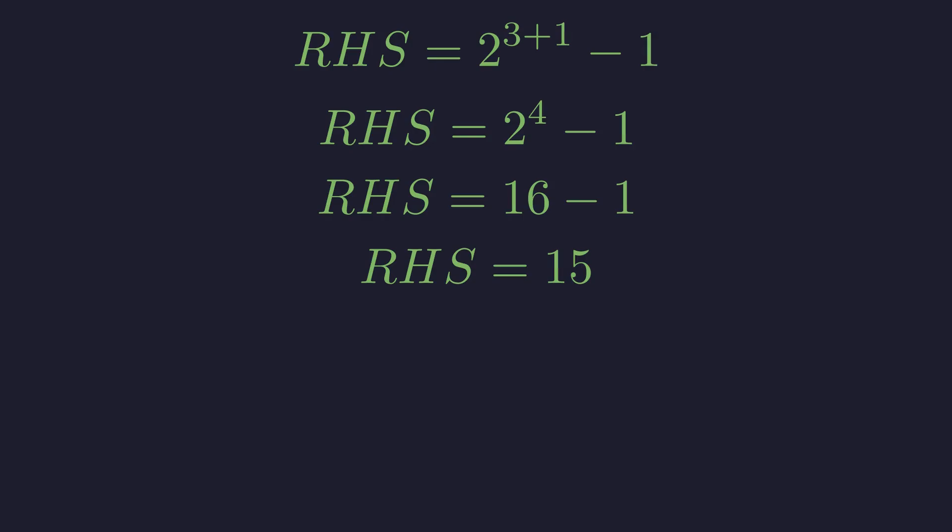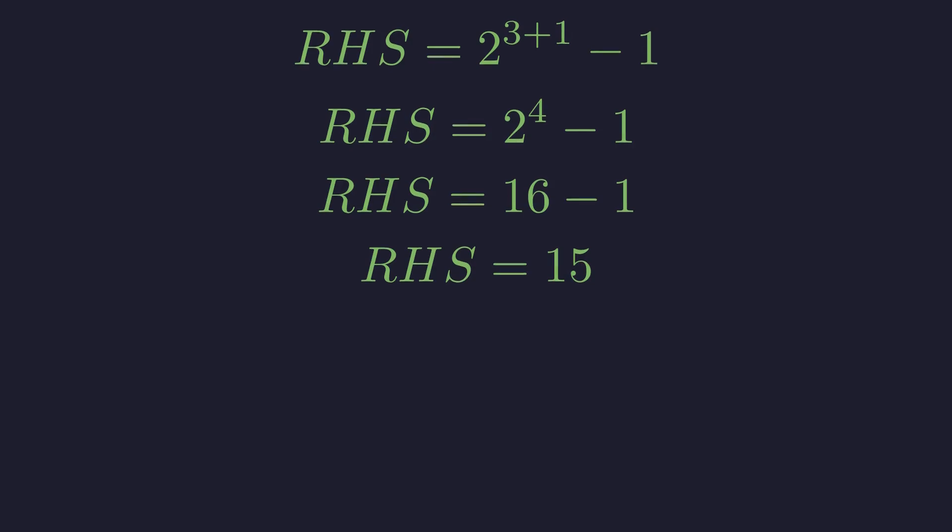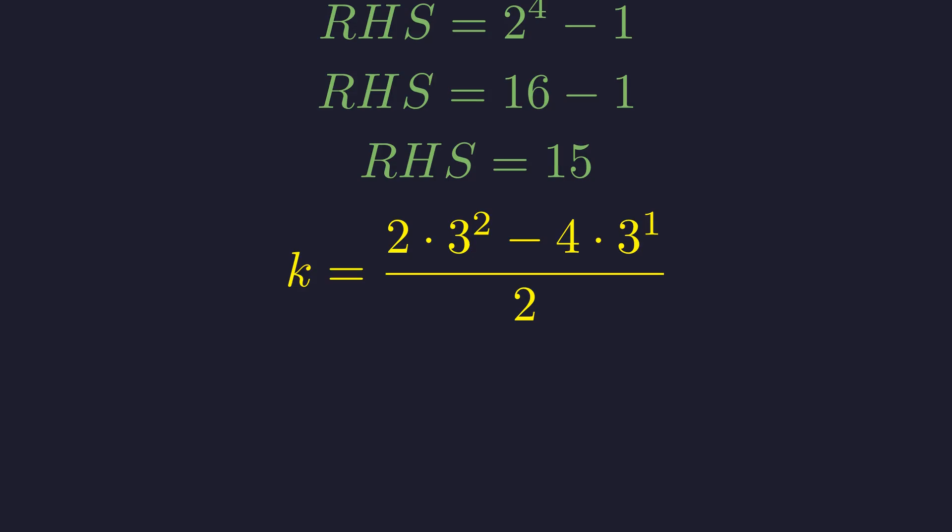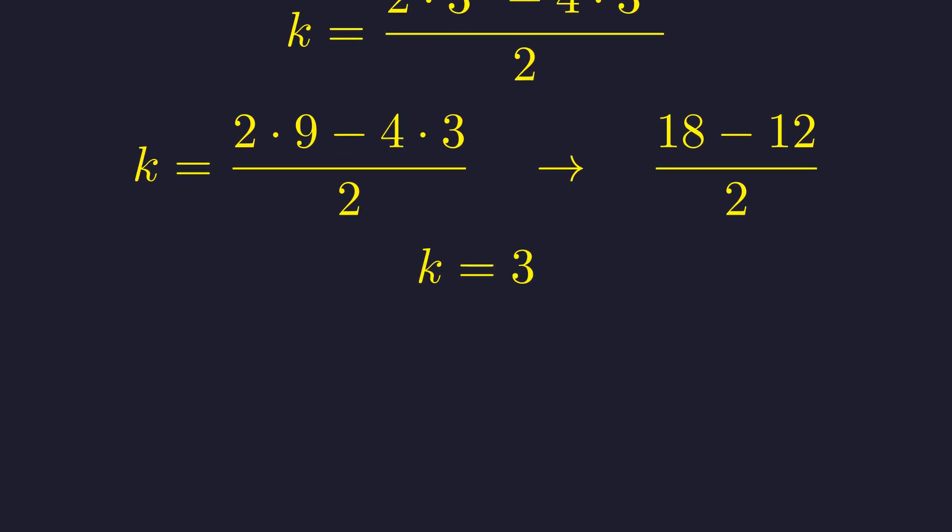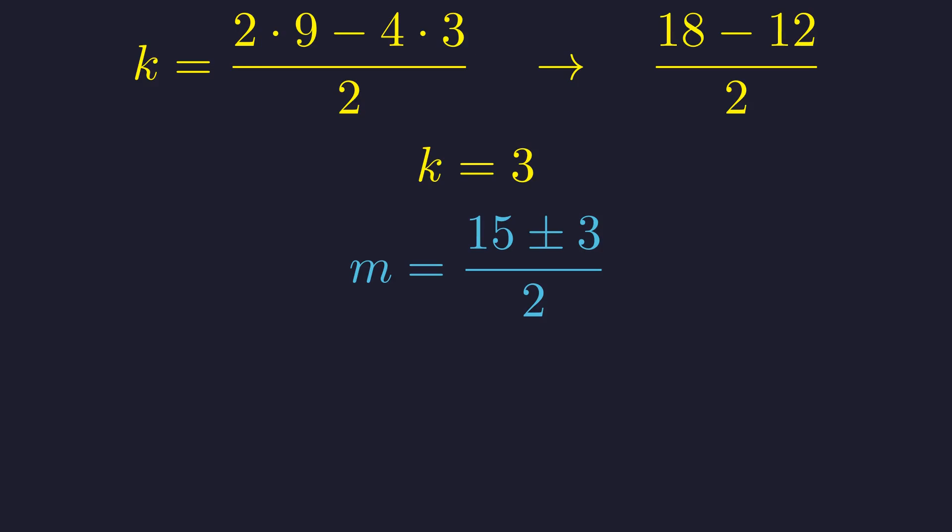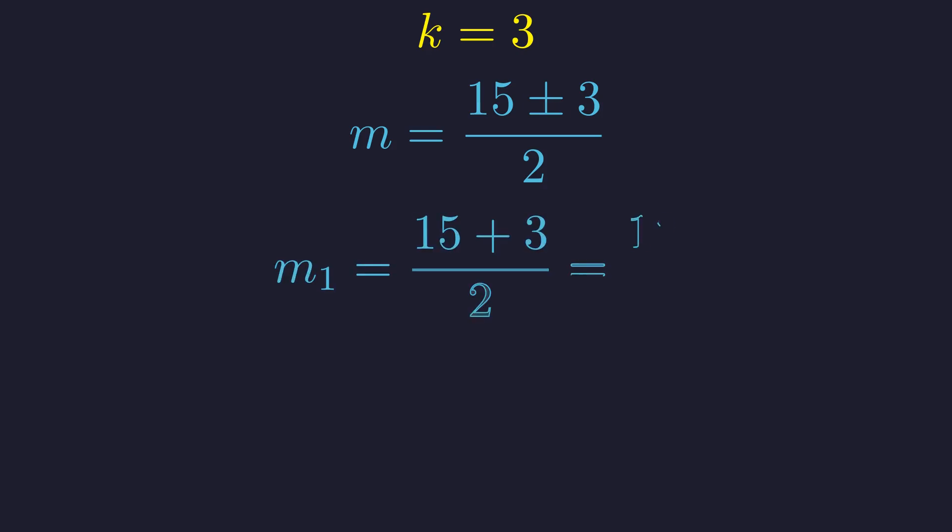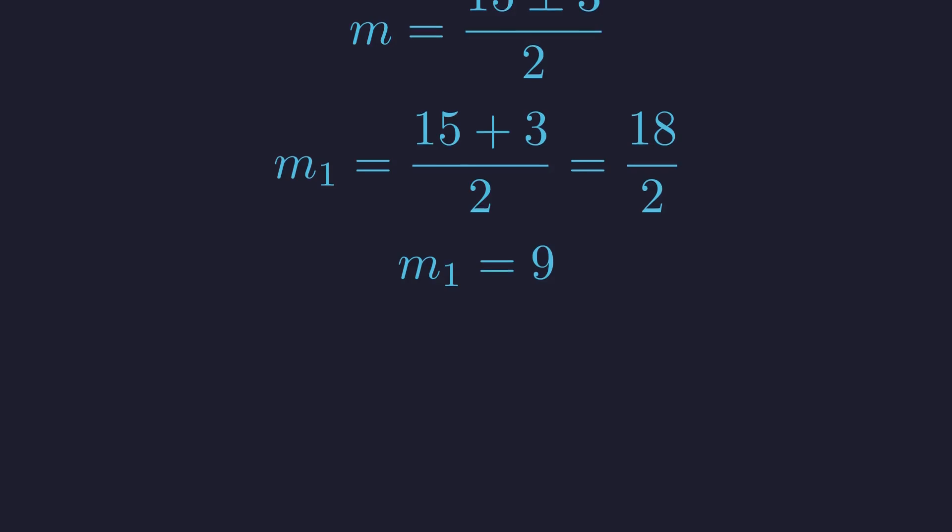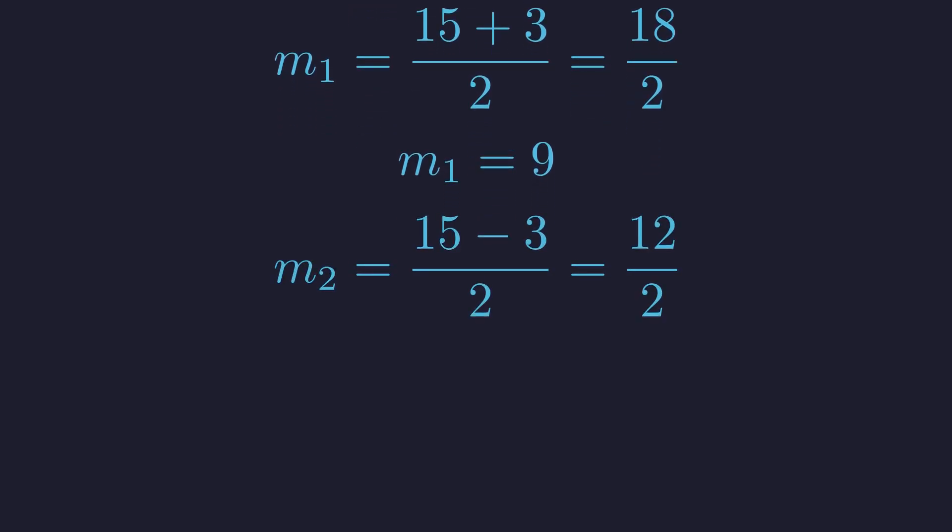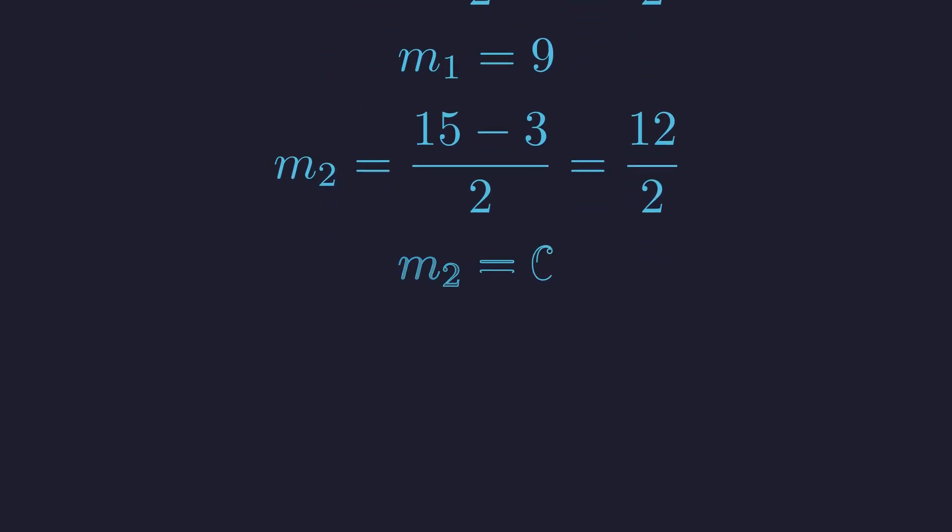With n equals 3 confirmed, we proceed to find the corresponding values for m. We calculate k for this scenario. First, evaluating the powers and simplifying, this gives k equals 3. We substitute n equals 3 and k equals 3 into the formula for m. The first solution comes from addition, which yields m equals 9. The second solution comes from subtraction, which yields m equals 6. This scenario provides the pairs (9, 3) and (6, 3).